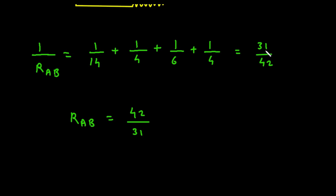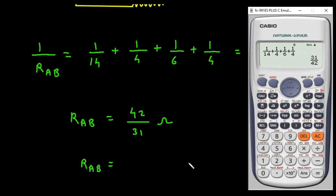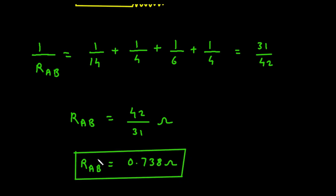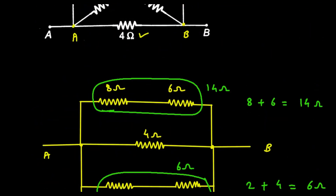So RAB equals 42 divided by 31 ohm. If we simplify this, it will be 0.738 ohm as the final answer for RAB. Now we can verify our answer.